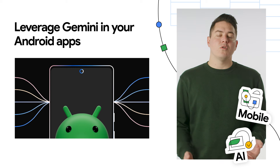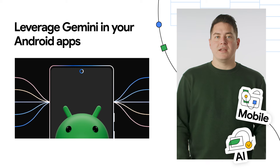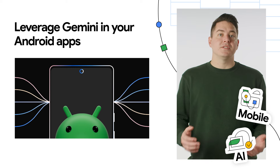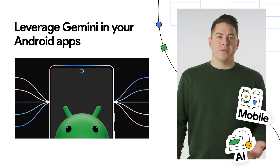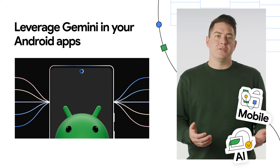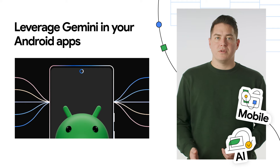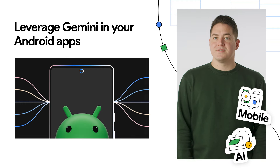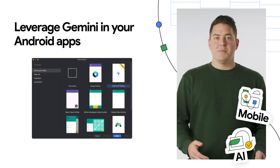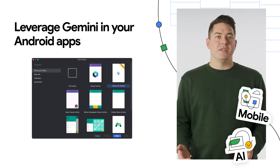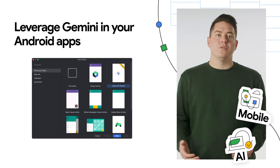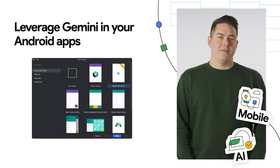Android can run a local model called Gemini Nano on select devices, but to target all Android models, you can use Gemini Pro, which runs off-device in Google data centers. Gemini can be called via the Gemini API and Google AI SDK.